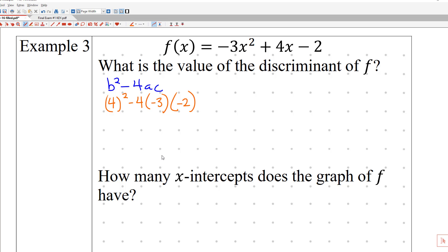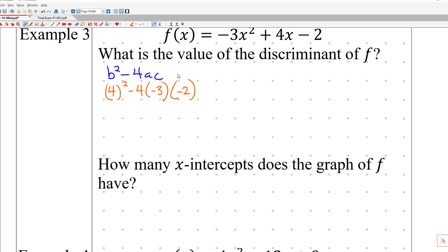And then there's a next question that's based on this question. So 4² is going to be 16. Negative times negative times a negative is a negative. 3 times 2 is 6. 6 times 4 is 24. And 16 minus 24 is -8. So my final answer is -8 is the value of the discriminant.